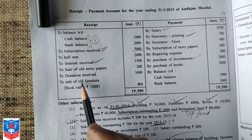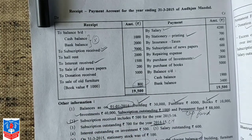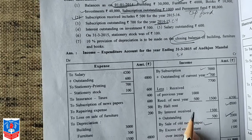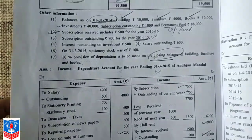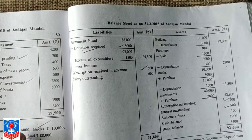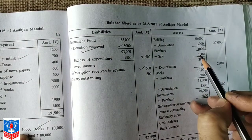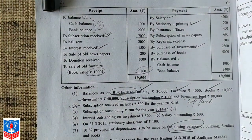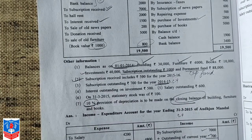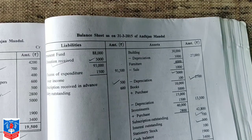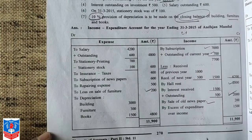Next is sale of old furniture — it was sold for 800, but its book value was 1,000, so there is a loss of 200. Show this as loss on sale of furniture — 200. Now for furniture: opening balance is 4,000, sold 1,000 worth, leaving 3,000. The adjustment requires 10% depreciation on closing balance, so 10% of 3,000 is 300. Outer column shows 2,700, and depreciation on furniture is 300.